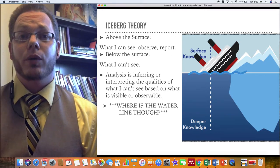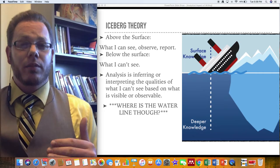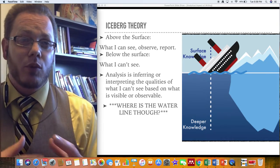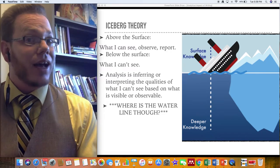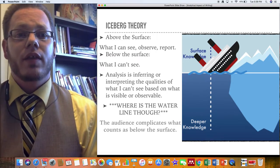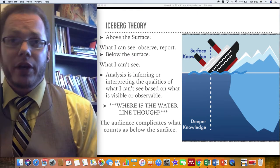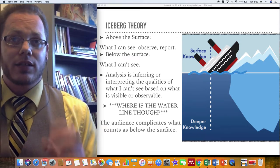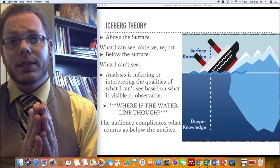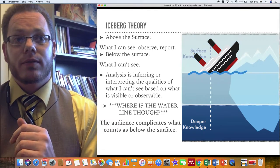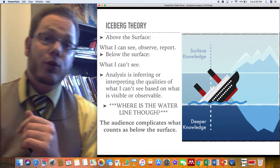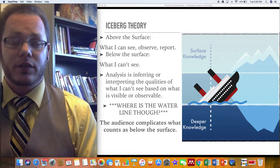The challenge, and this is where we make the shift from a foundational version of analysis to a more advanced version, is we need to ask the question: where's the water line? Because the audience, our readers when we write, complicate what counts as below the surface, what counts as what I should be able to see. So if the surface moves, what might cause the surface to move?